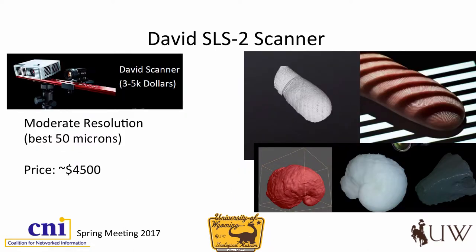Most scanners that most people are familiar with, at least in the consumer industry, are laser scanners. This is something called a structured light scanner, and it operates a little bit differently. It's a moderately priced unit — between the laptop and the scanner itself, we have about $7,000 into this. We wanted to make sure this setup was mobile so that we could move it to the geological museum and back to the libraries. The scanner itself is about $4,500. Basically, there's a projector that projects structured light onto an object as well as a camera. It casts structured light across an object and measures the displacement of the light over the object to generate the three-dimensional model in a very small nutshell.